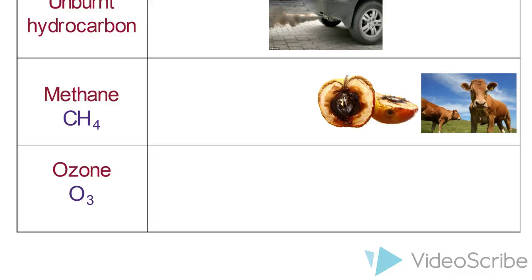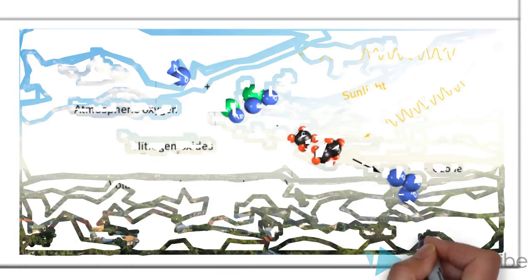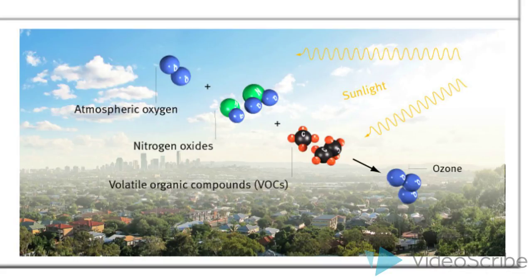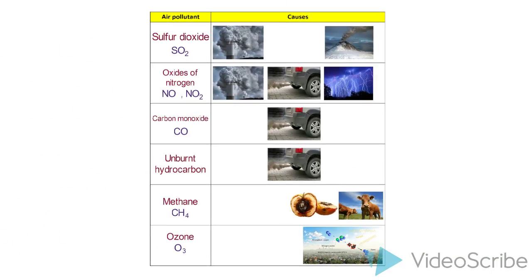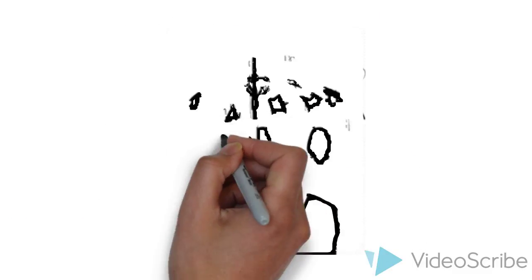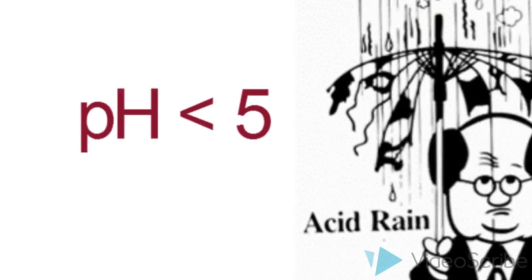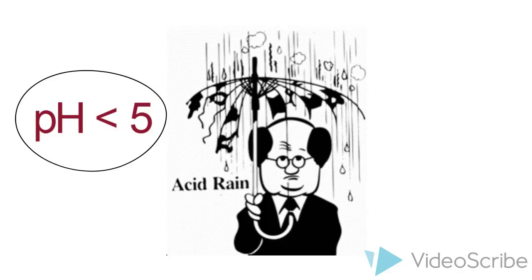carbon monoxide, and hydrocarbons. So, as you can see, these are the six key air pollutants and their causes can be classified into both either man-made or by natural causes. Among these air pollutants, sulfur dioxide and nitrogen dioxide are the main ones that can result in acid rains. So, what exactly is acid rain? Acid rain refers to any rainfall that has a pH of less than 5. Let us now take a look at the formation of acid rain.